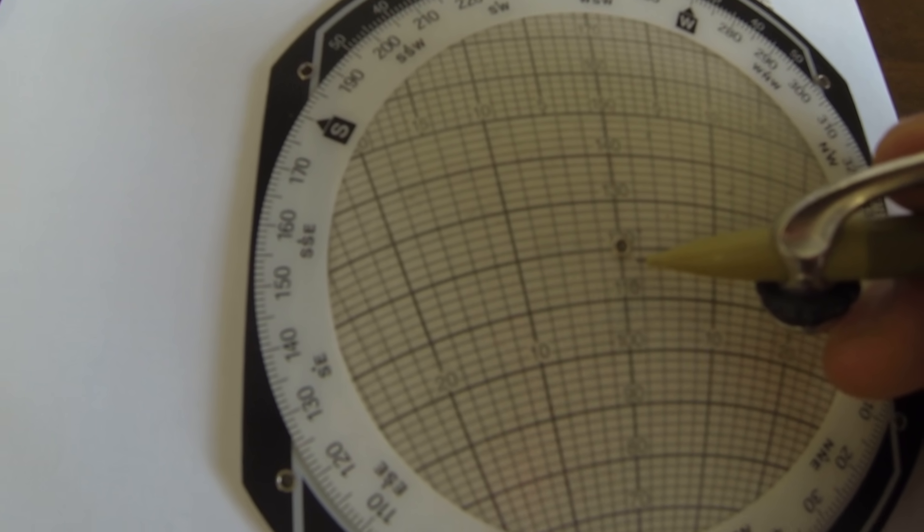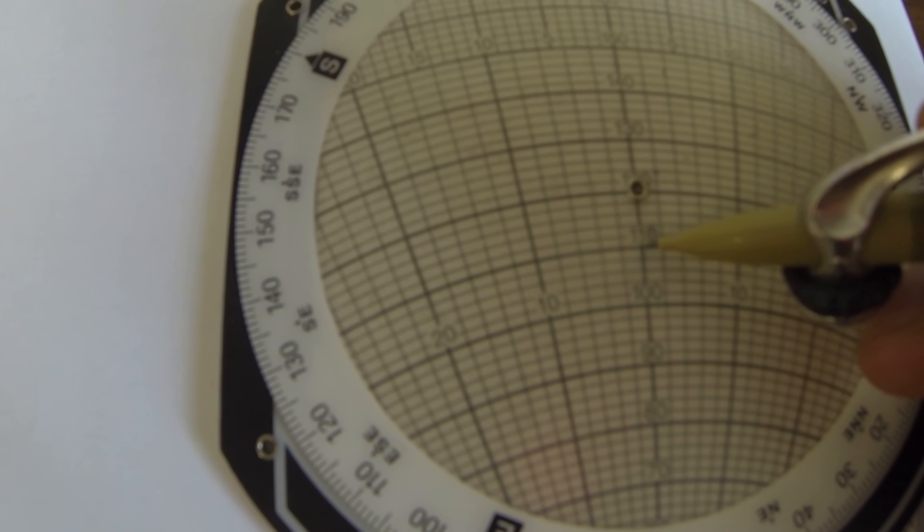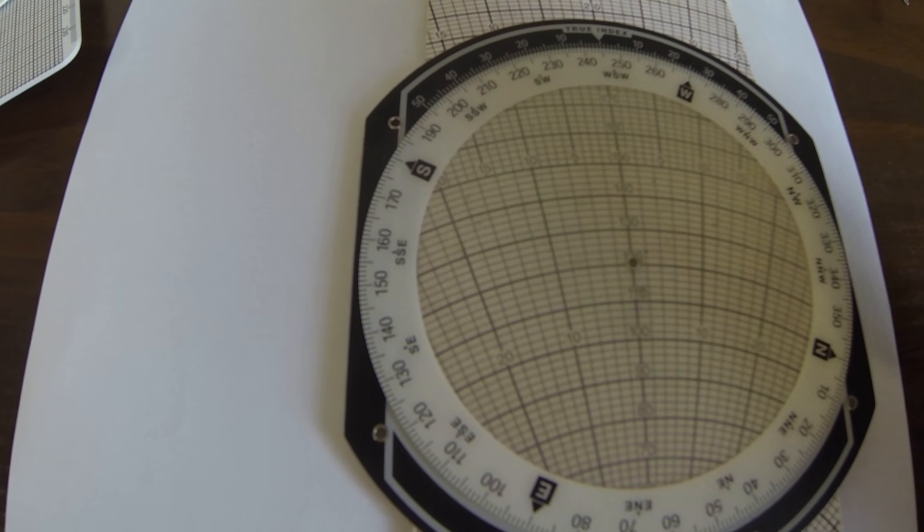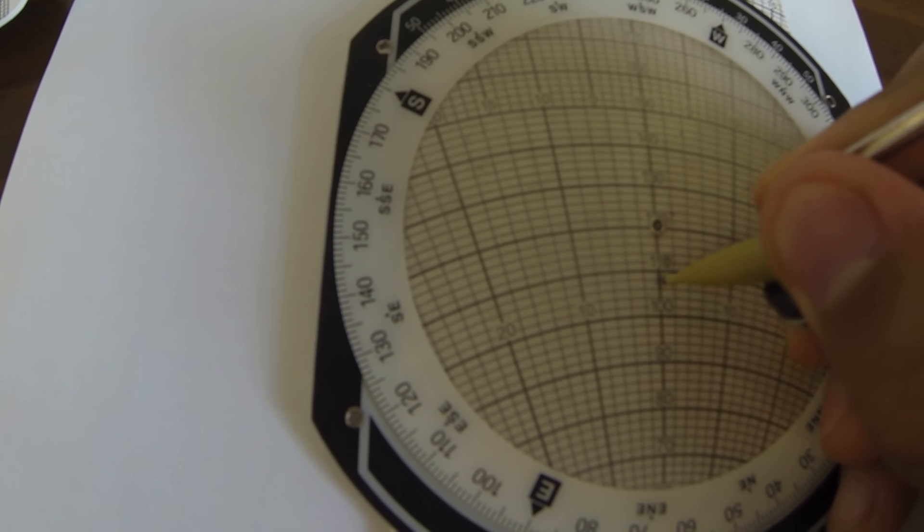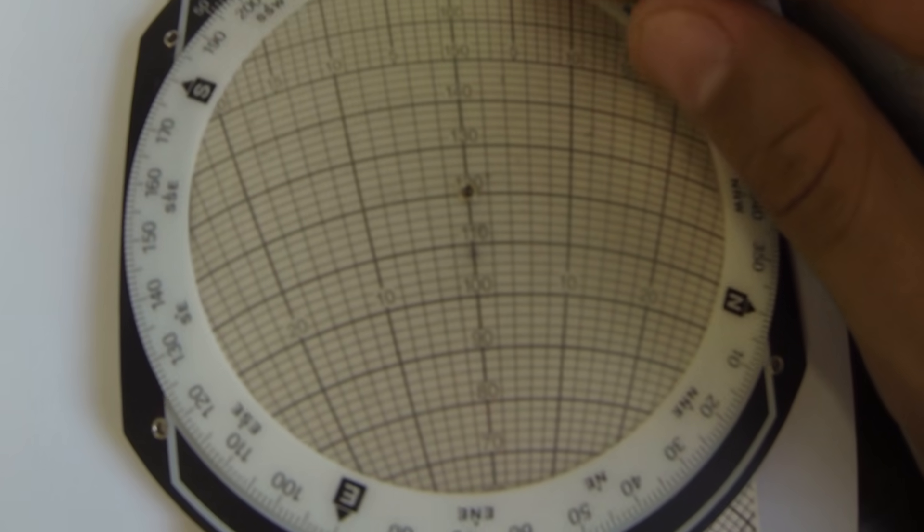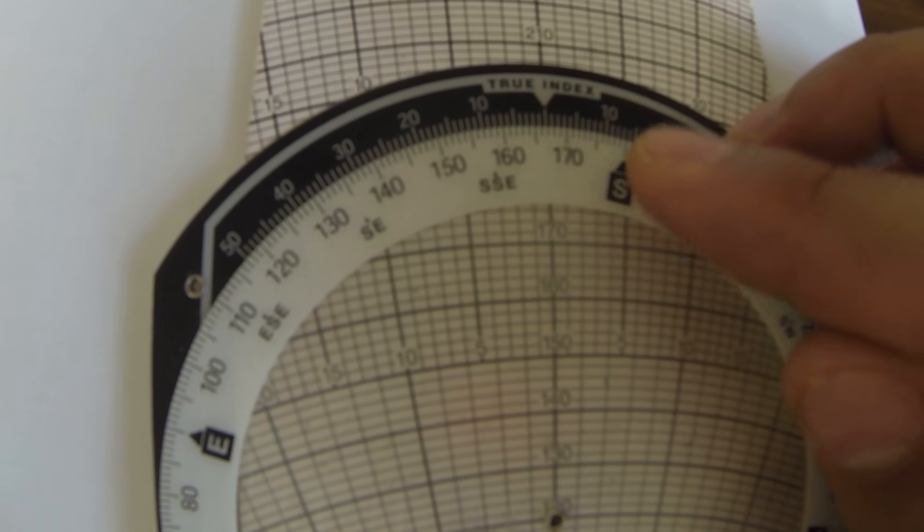So 2, 4, 5, this is 10, 12, so we make a mark here at 12. Then we have to put the actual heading 150.